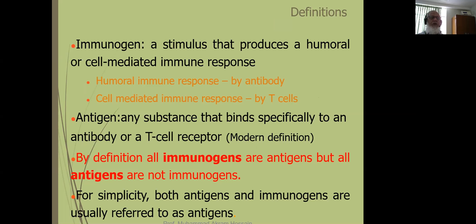Later on, the definition of antigen has been changed. Now, any substance that binds specifically to an antibody or a T-cell receptor is known as an antigen — meaning antigen may or may not produce the antibody or T-cell response; they just have the capacity to bind. So by definition, all immunogens are antigens, but not all antigens are immunogens. For simplicity, both are usually referred to as antigens.